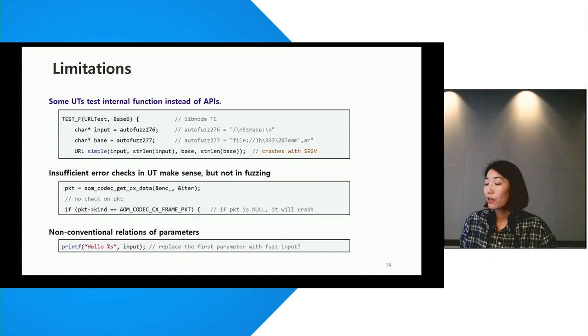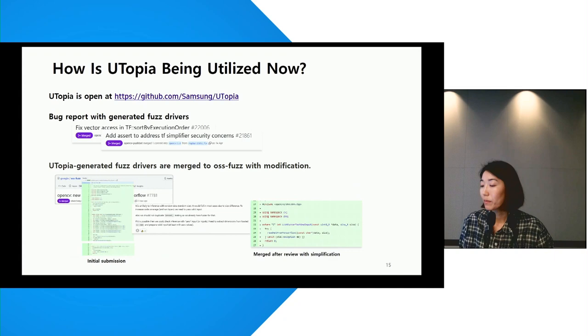Although there have been good results, there are certain cases that Utopia cannot handle. One limitation is that not all unit tests are designed to test APIs. Some are used to test internal functions. This can often lead to fuzzing efforts. We also experienced that a bug report in LibNode was not accepted because functions in LibNode are not directly exposed to applications. Other limitations are missing error checks that are only comprehended in unit tests, as well as non-conventional design of APIs, such as print app, can make it difficult for Utopia to understand them.